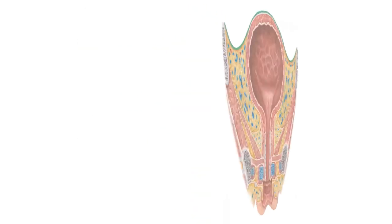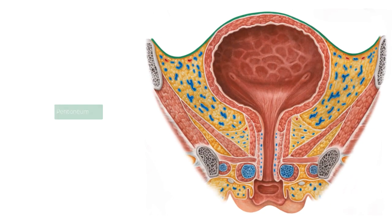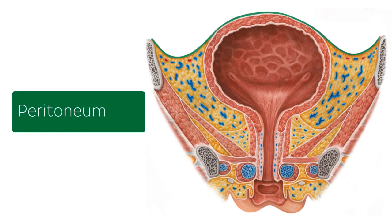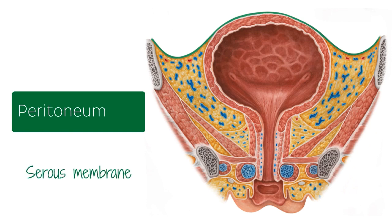The first structure I would like to highlight here is known as the peritoneum. Before I go and talk about the actual bladder, I would like to briefly mention the peritoneum and the pelvic fascia that cover part of the bladder. Now the peritoneum is a serous membrane that lines the peritoneal cavity, and this membrane supports and lines the organs of the abdomen and pelvis.